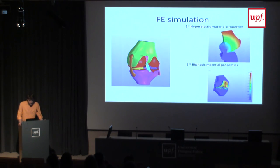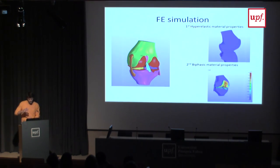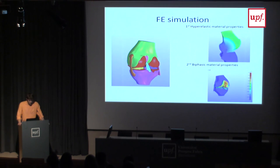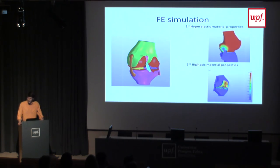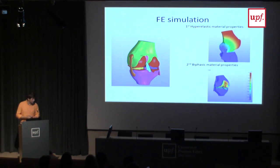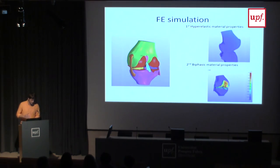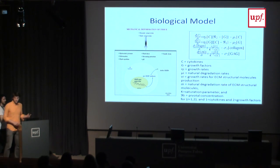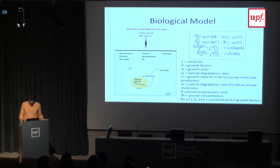We built a simulation with the finite element model, starting from the equations and inserting literature values into the material properties in the software, then running the simulation. A video shows the total displacement of the joint under a load of 500 Newtons for the hyperelastic cartilage model. For the biphasic model, unfortunately the second part did not run as expected, so we could only visualize the free swelling of the cartilage — what happens with no load applied, as water is taken up until the structure reaches equilibrium. From the first model we extracted the strain within the cartilage, which was used in the second part of the project for the biological model.